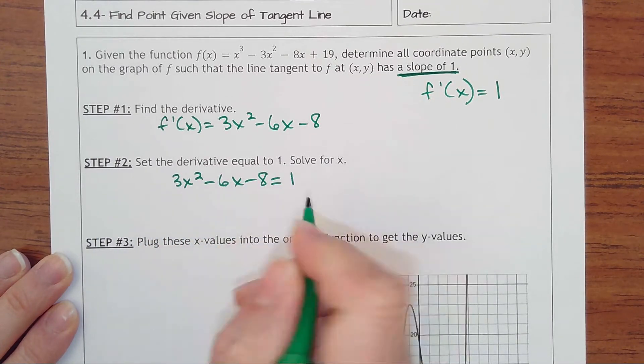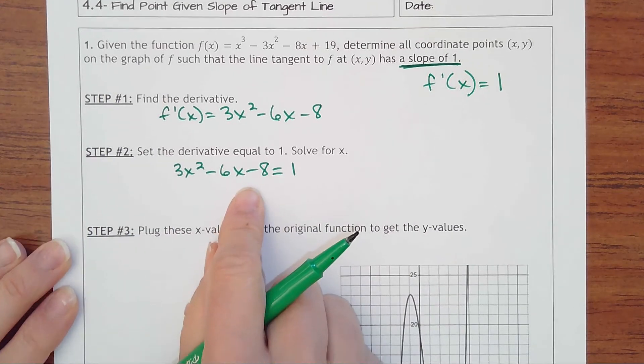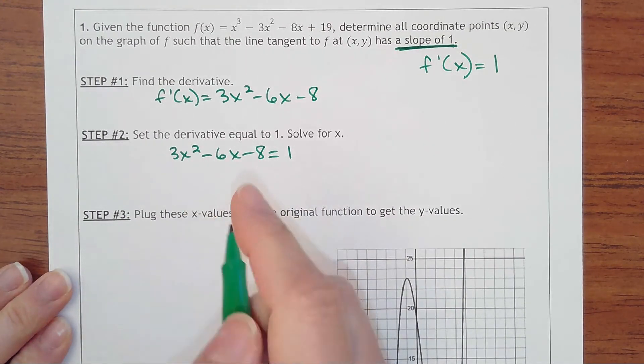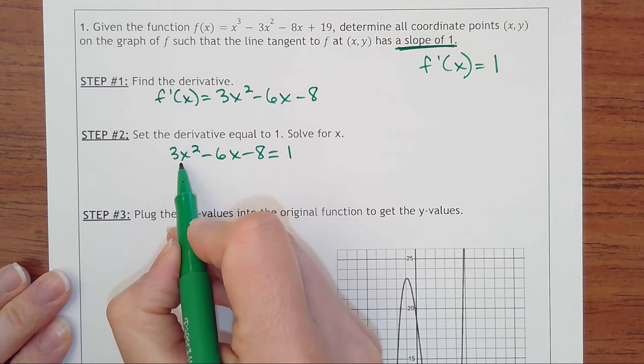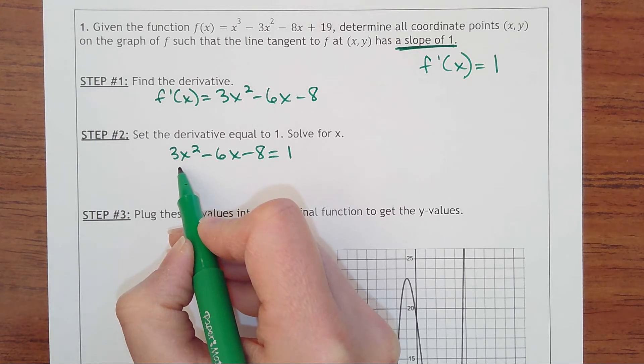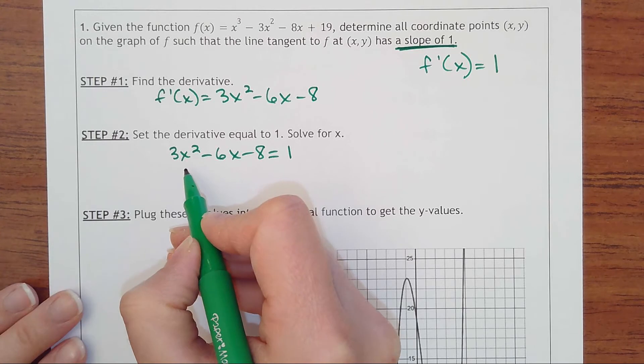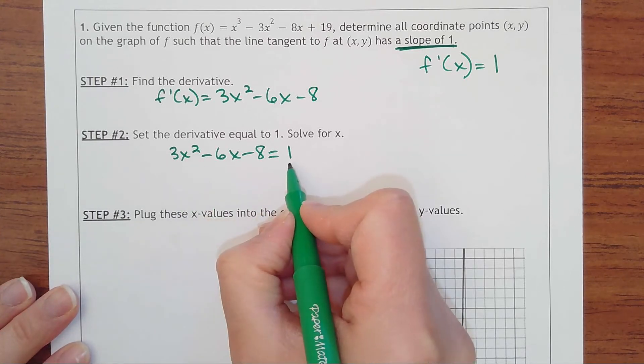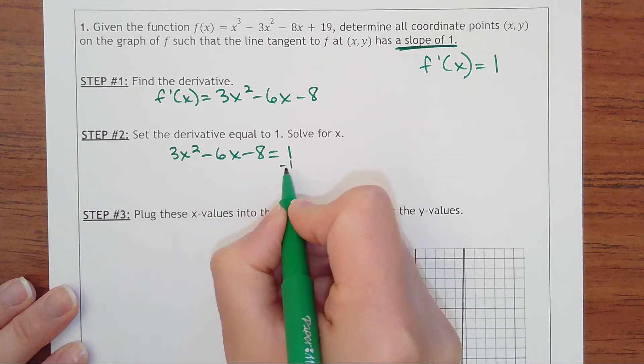We're finding what x-values have a slope of 1. Hopefully you remember from algebra that this is a quadratic. To solve a quadratic, your options are the quadratic formula, factoring, or square roots method. But I need this set equal to 0, so I'm going to subtract the 1.